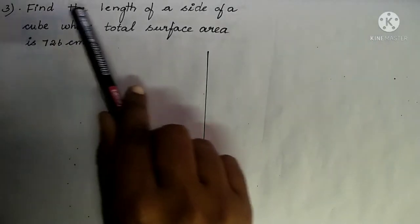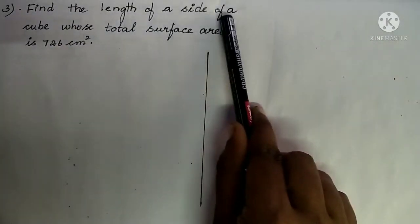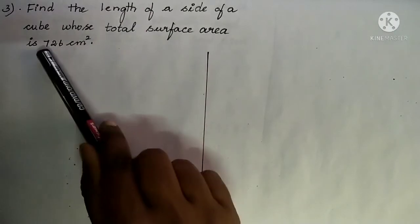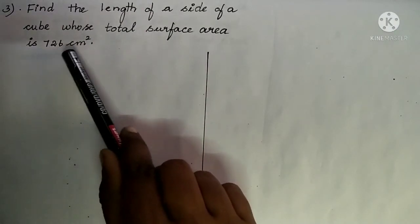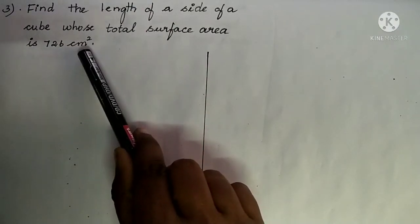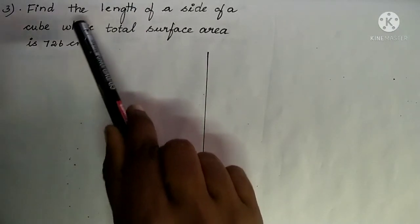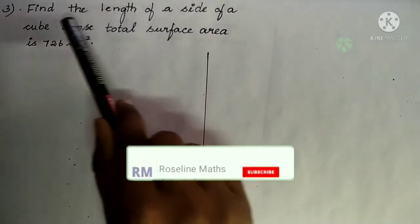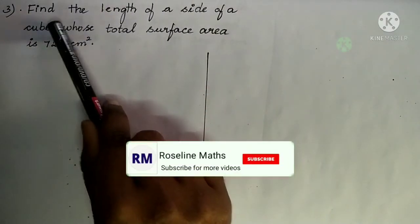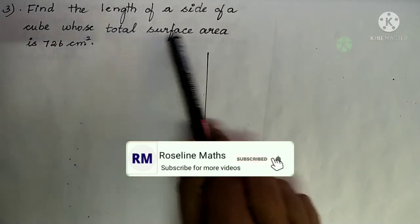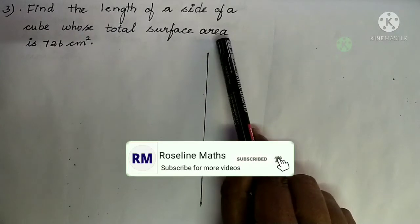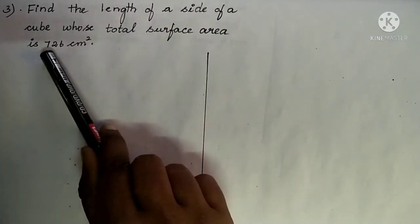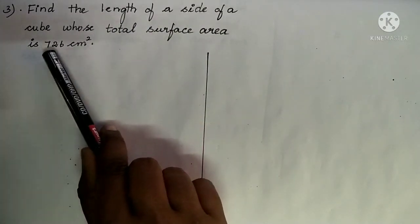Question number 3. Find the length of a side of a cube whose total surface area is 726 cm². Here we are going to find the length of a side of a cube. It is L we are going to find, and it is given that the total surface area (TSA) of the cube is 726 cm².